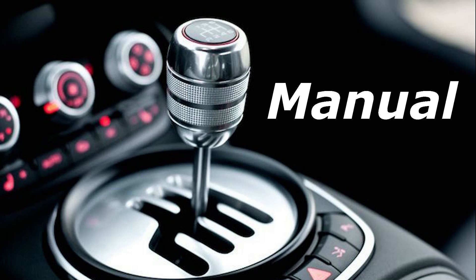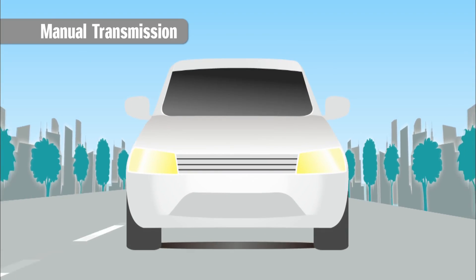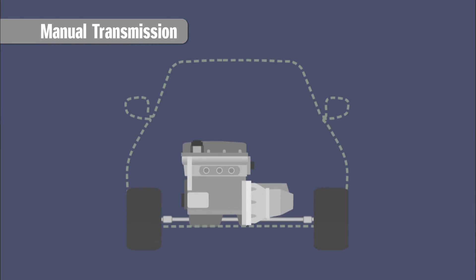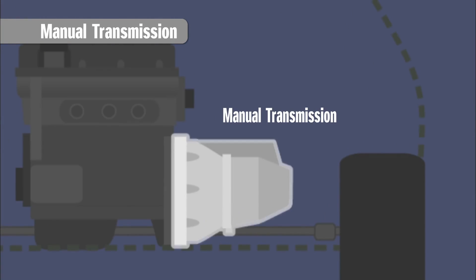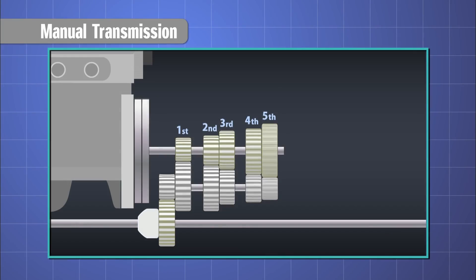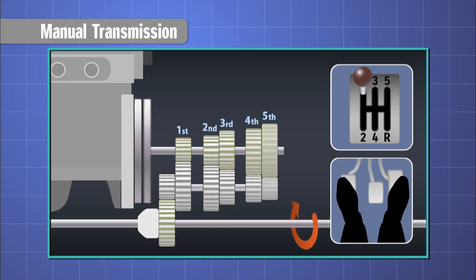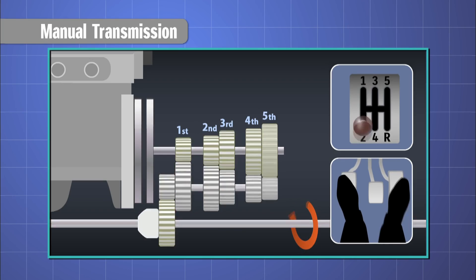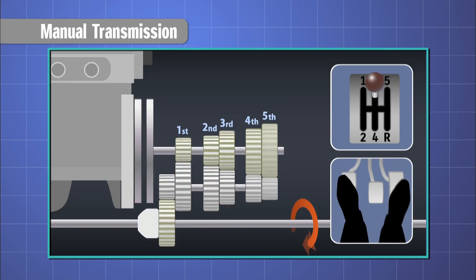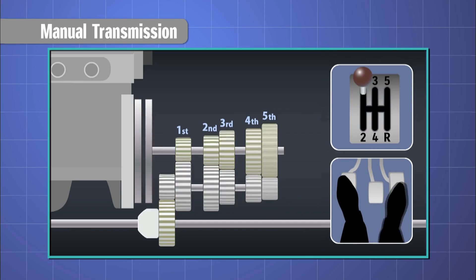So now to the types. Let's start with the most common type: manual transmission. As the name suggests, the driver should manually change the gears using the clutch. There are three pedals in cars: accelerator, brake, and clutch.